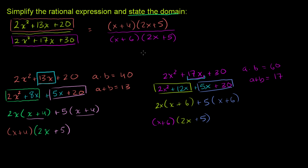So what are the valid x values that we could put in here? Or I guess a more interesting question, what are the x values that will make this rational expression undefined? Well, it's the x values that will make the denominator equal to 0. And when will the denominator equal to 0? Well, either when x plus 6 is equal to 0, or when 2x plus 5 is equal to 0.